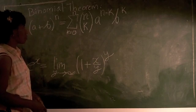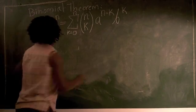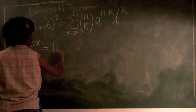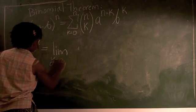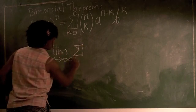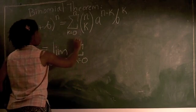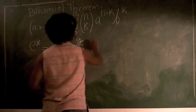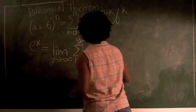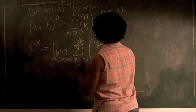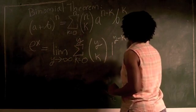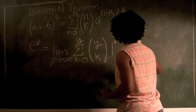So now I apply the binomial theorem to e to the x. e to the x will be equal to the limit as y goes to infinity of the sum from k is equal to 0 up to y of y choose k all times, now a is equal to 1 to the y minus k power and b is equal to x over y to the k.